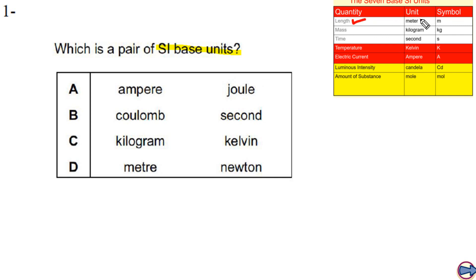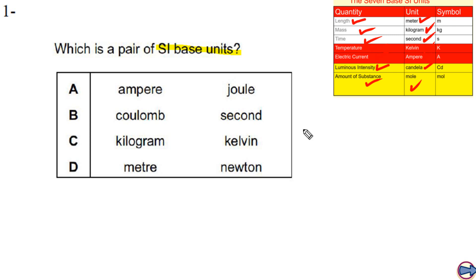Length is a quantity; its unit is meter. Mass is a quantity; its unit is kilogram. Time: seconds. Temperature: Kelvin. Electric current: amps. Luminous intensity: candela. Amount of substance: mole. These are the seven SI base units and seven SI quantities. We need to be quite clear about this.